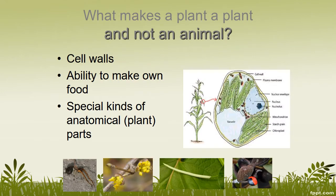So what are a few things that make plants unique and different from animals? Their cells have cell walls, which is a hardened structure that helps to maintain rigidity in plants and make them stand up. They are able to make their own food from sunlight, carbon dioxide, and water. And then there are a number of different special parts inside of a plant cell that makes it different from animals.